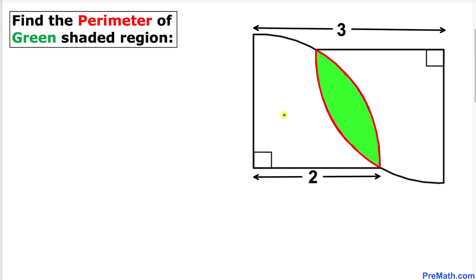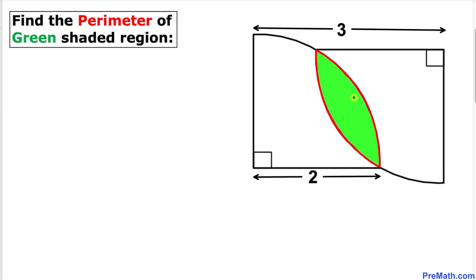Welcome to Pre-Math. In this video tutorial, two quarter circles are intertwined such that a green shaded region is conceived, as you can see in this figure. The total length from one end to another end is 3 units, the radius of each quarter circle is 2, and both quarter circles are identical. We are going to calculate the perimeter of this green shaded region.